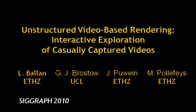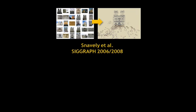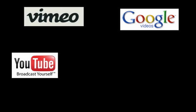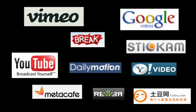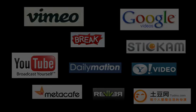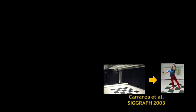Unstructured video-based rendering: interactive exploration of casually captured videos. Photo collections have been treated as multi-view data, allowing exploration and interactive navigation of static scenes with various degrees of photorealism. Similar video collections are still sparse because events require both temporal and spatial overlap, but with care, videos have been captured and processed to allow impressive new renderings.